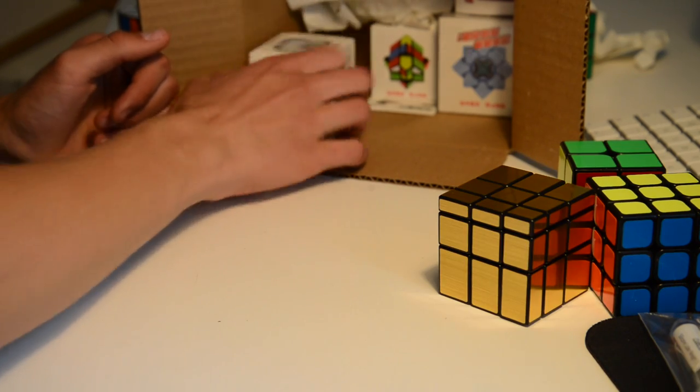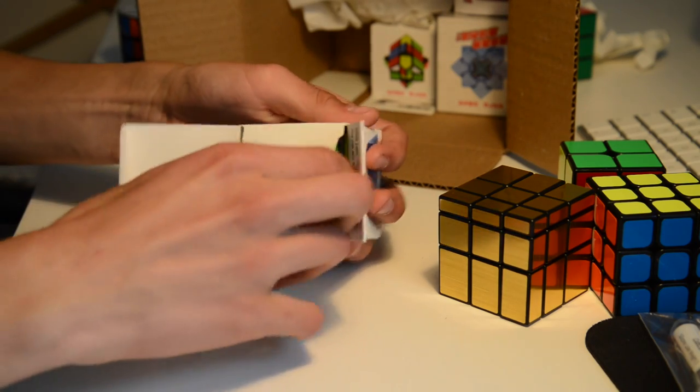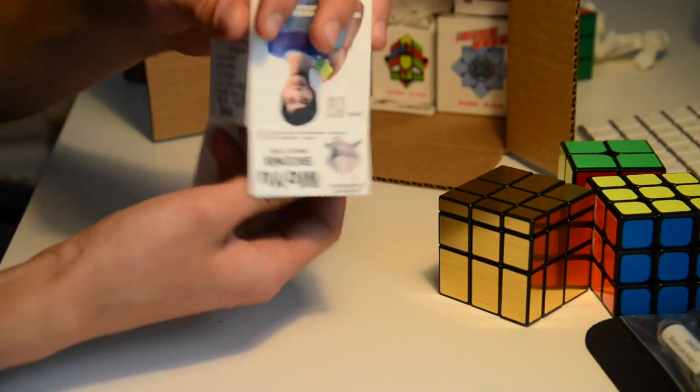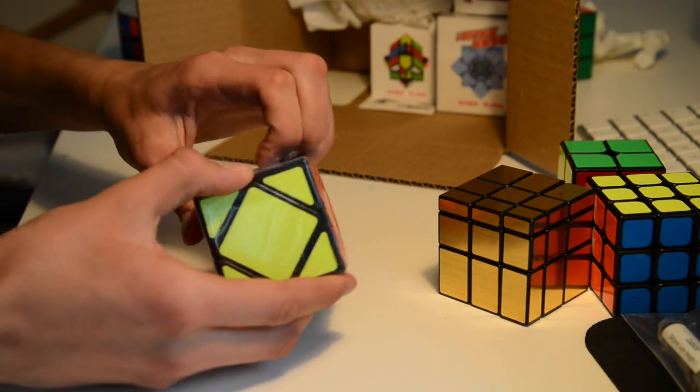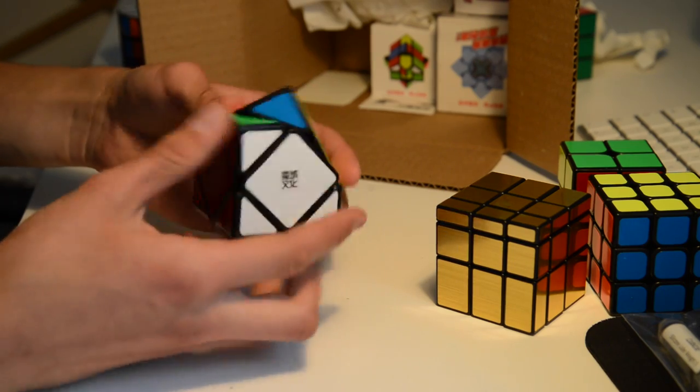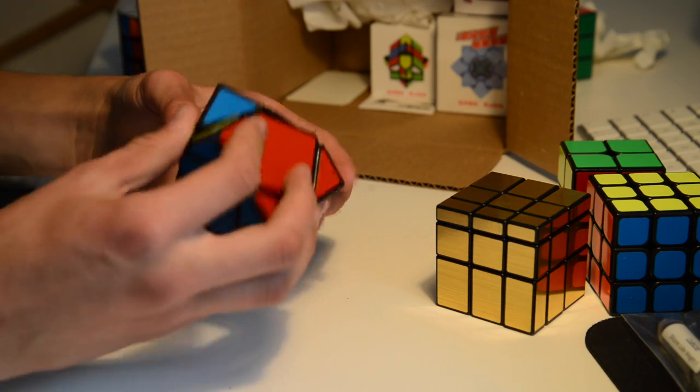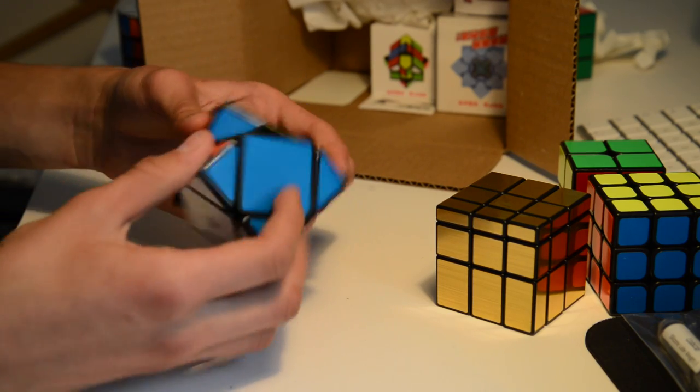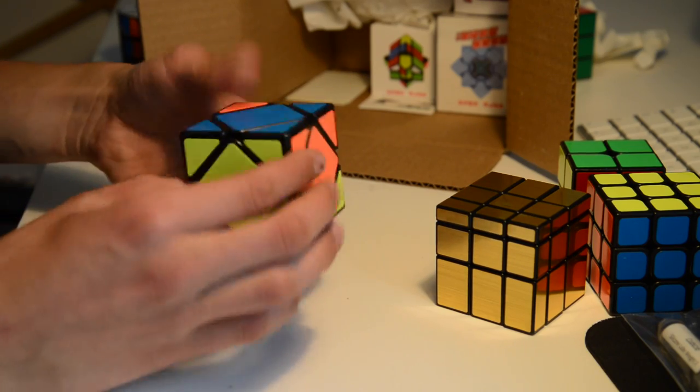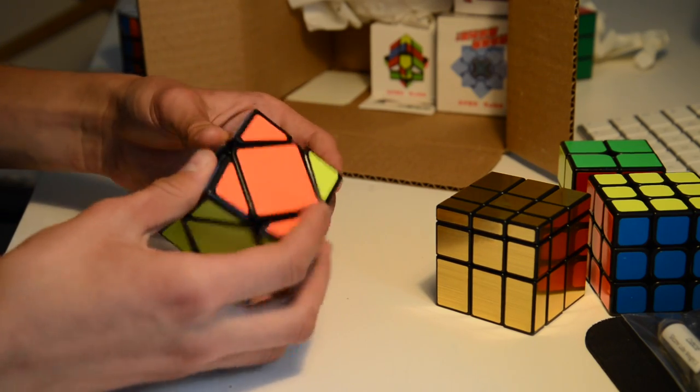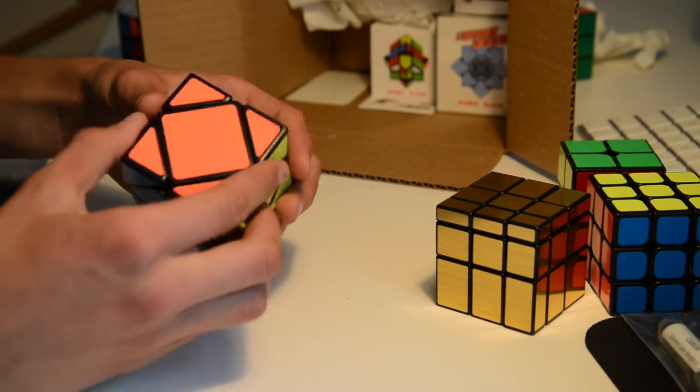Next up we have this cube, the MoU skew cube, and I really wanted one because I want to learn skew. Let's open it. So this is the cube. I really don't know how it turns. This is so weird. I don't want to scramble it because I don't know how to solve it, and that's the problem. But it feels pretty good.